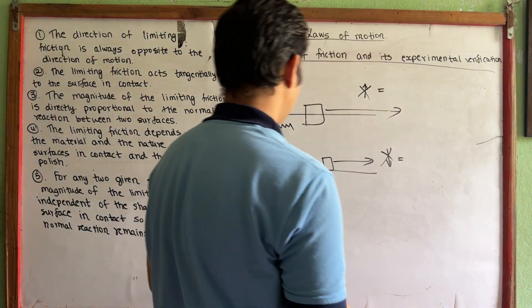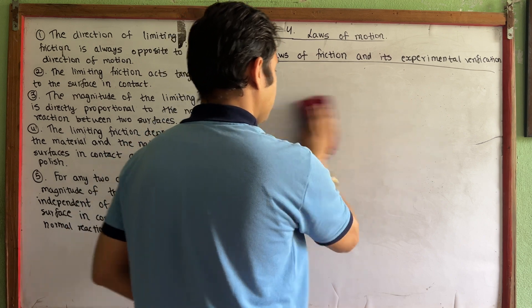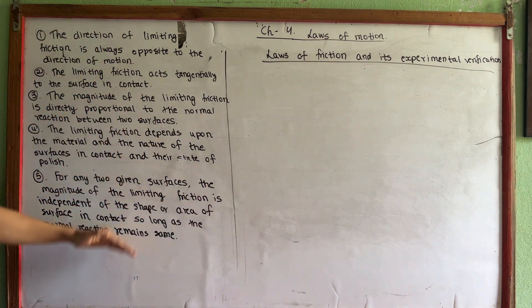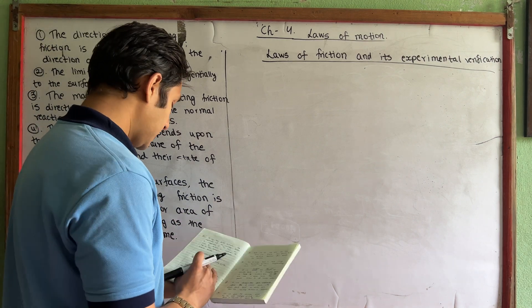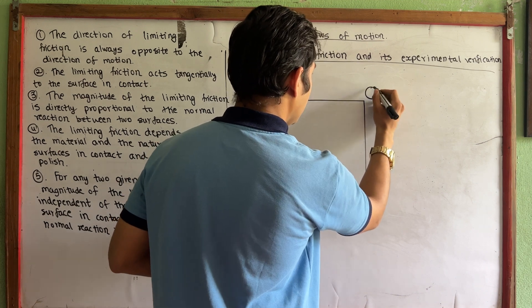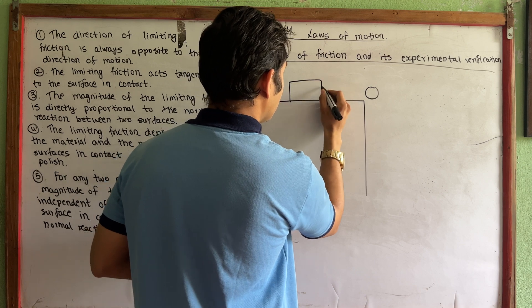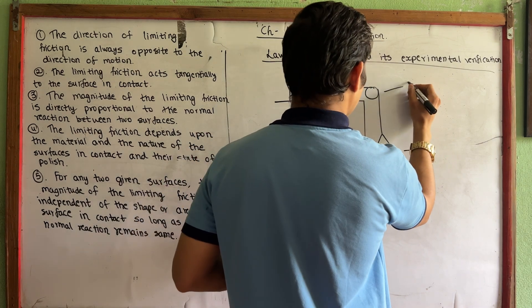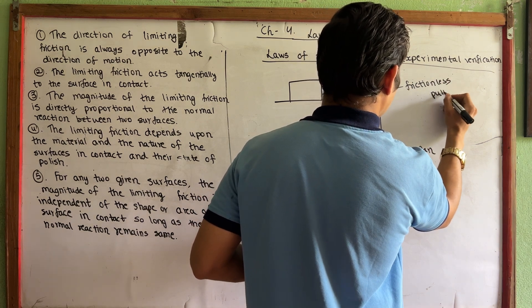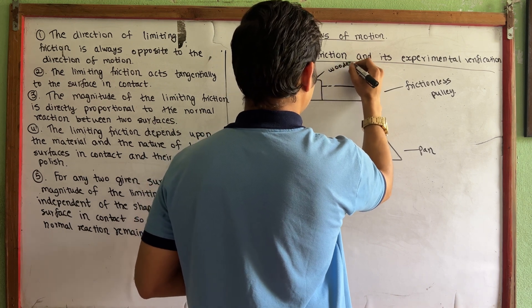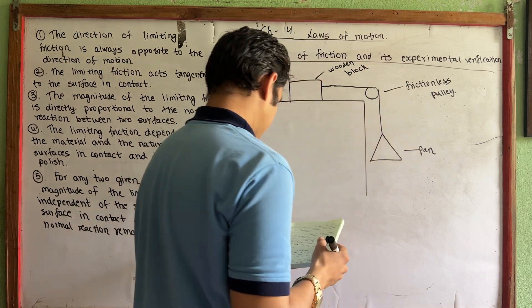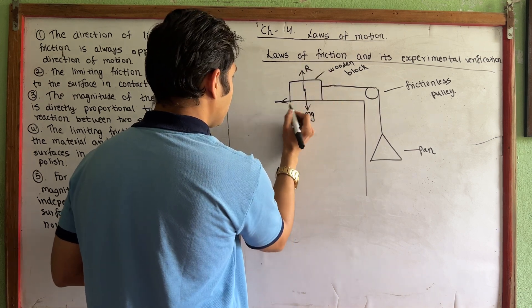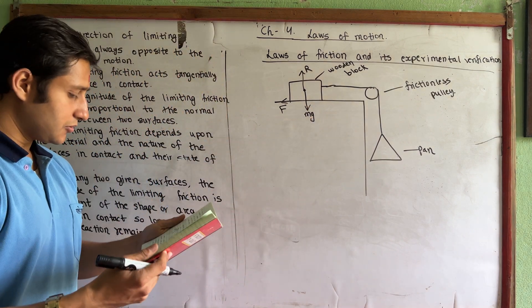Now we will do the experimental verification with a simple figure. We have a wooden block on a surface, a frictionless pulley, and a weighing pan. The block has weight mg, normal reaction R acting upward, and the frictional force acts tangentially. This setup is used to verify the laws of friction experimentally.